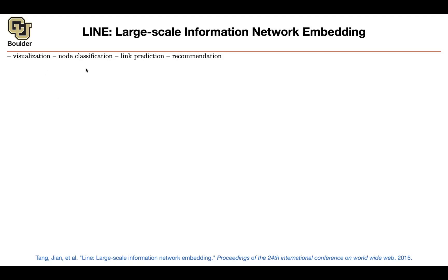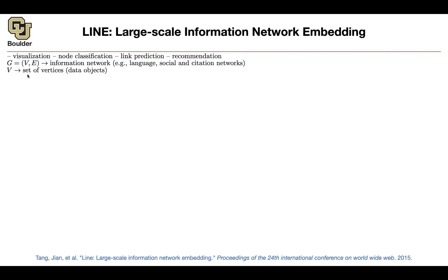In terms of applications, you can use graphs for visualization, node classification, link prediction, recommendation, etc. These are usually information networks — like language, social networks, citation networks — where one author or paper is citing another, giving you a set of vertices and edges.